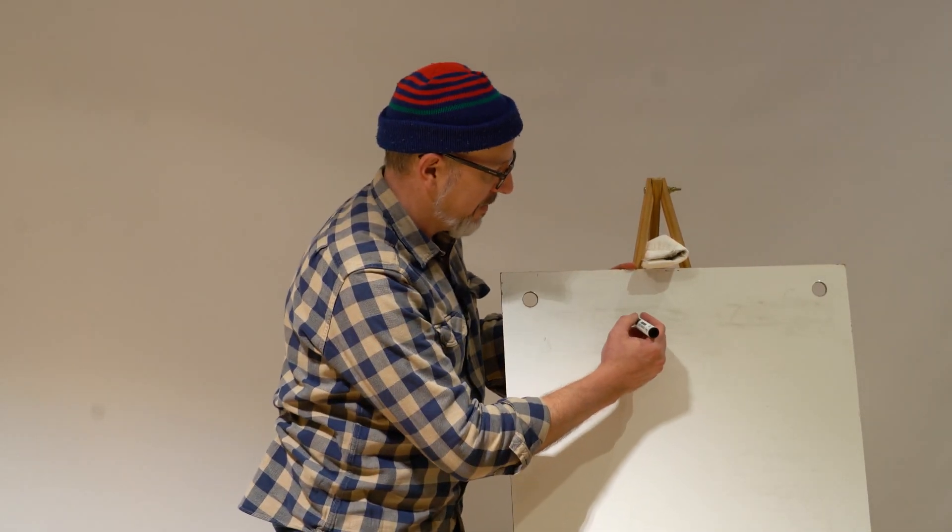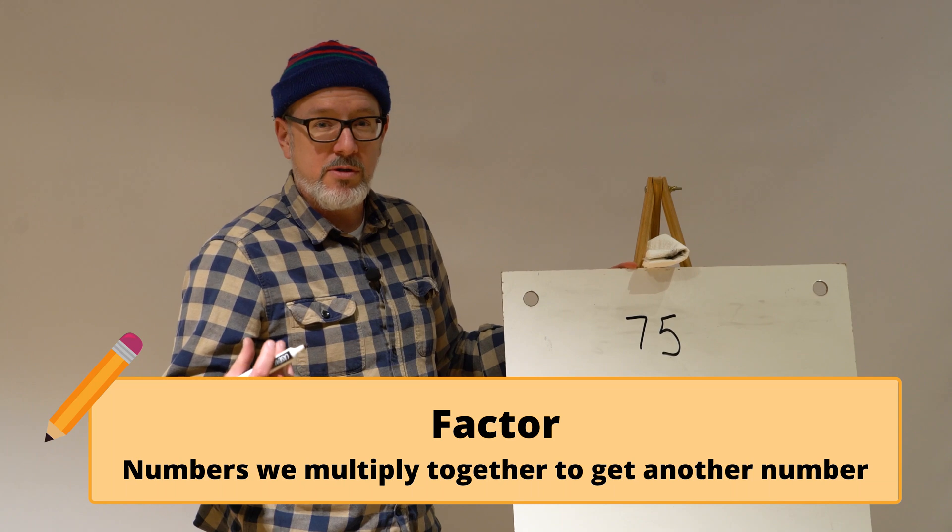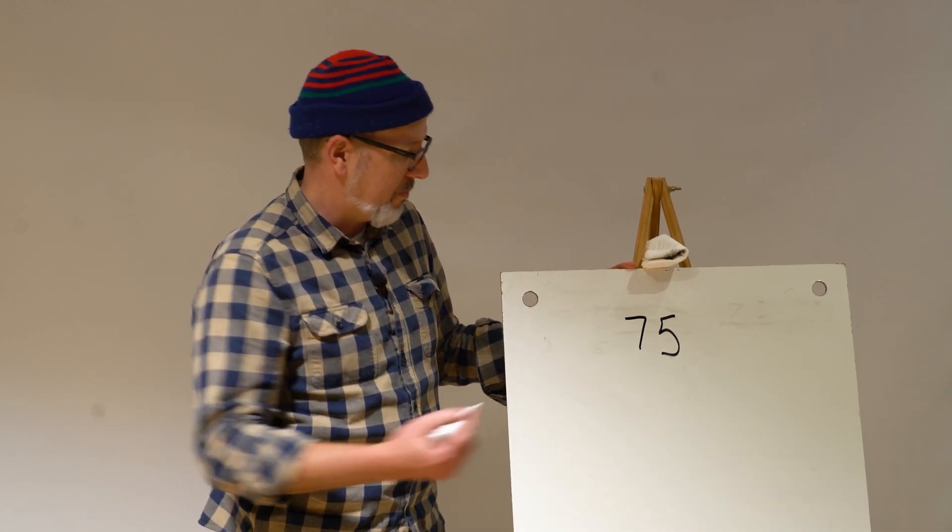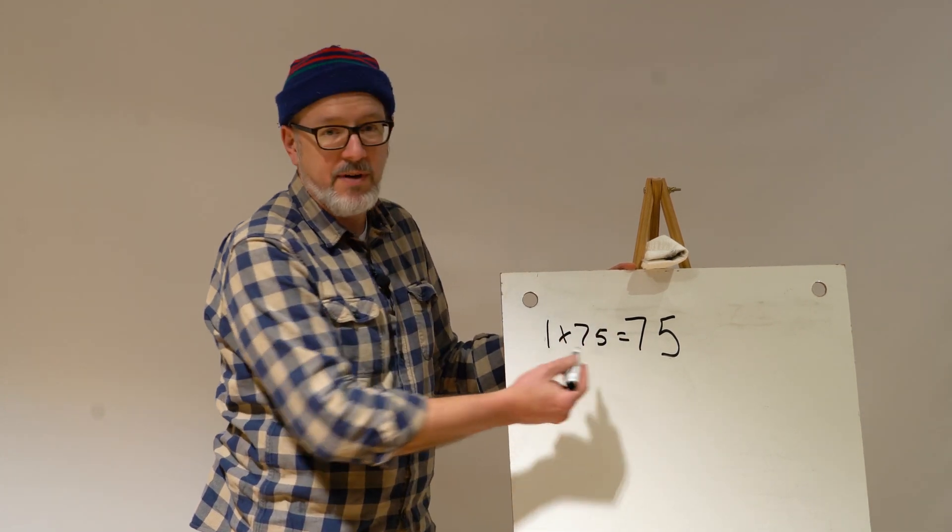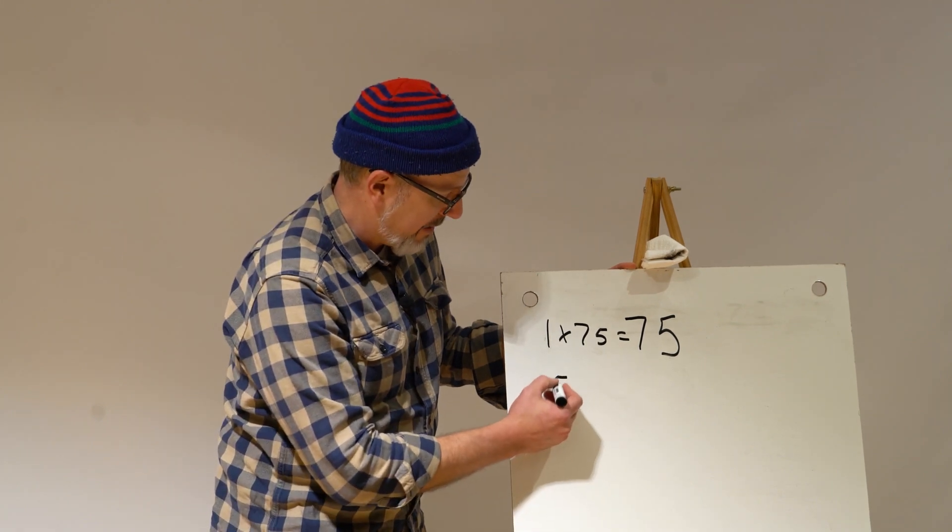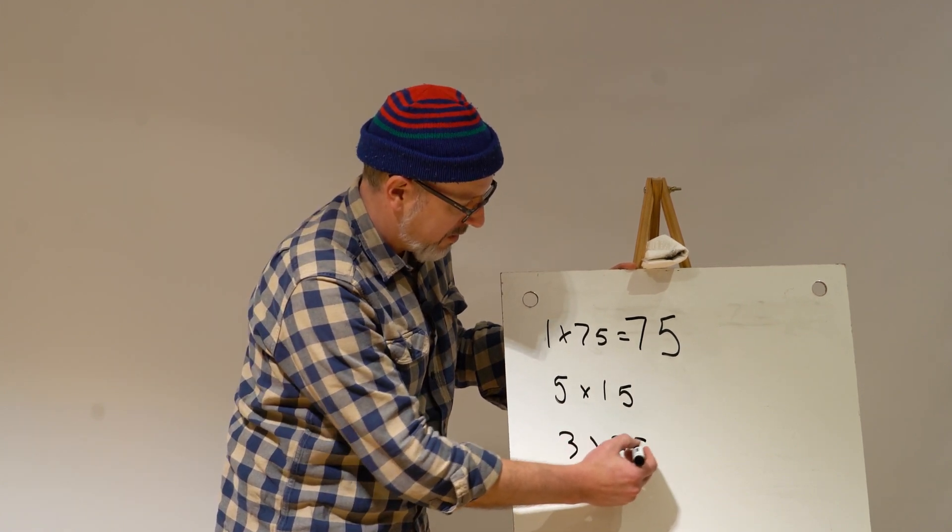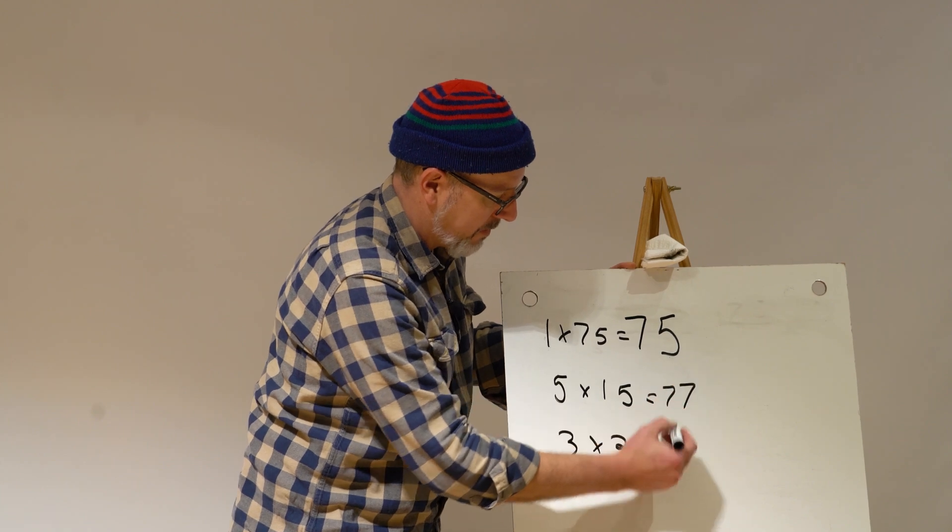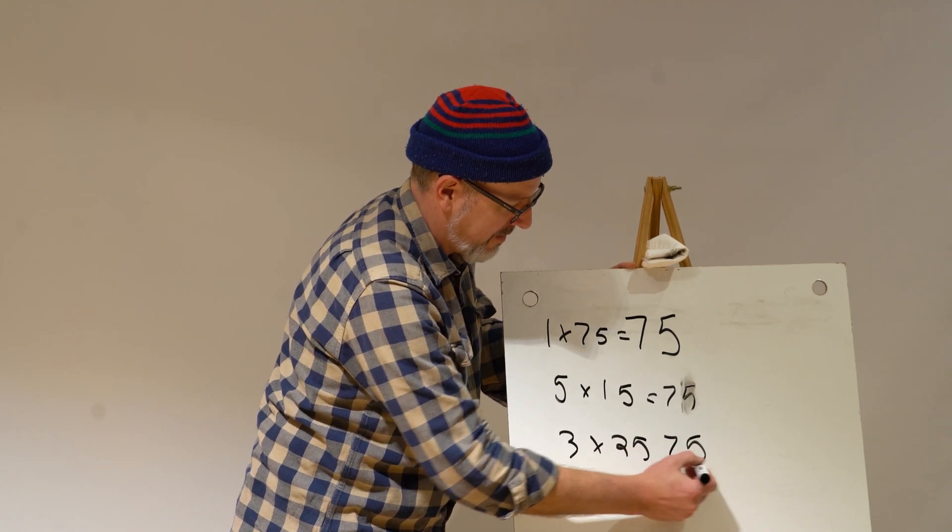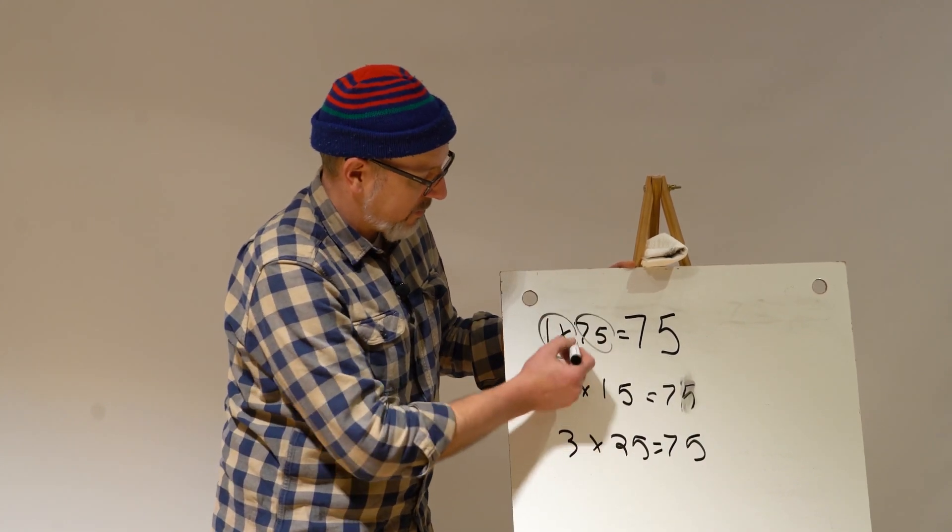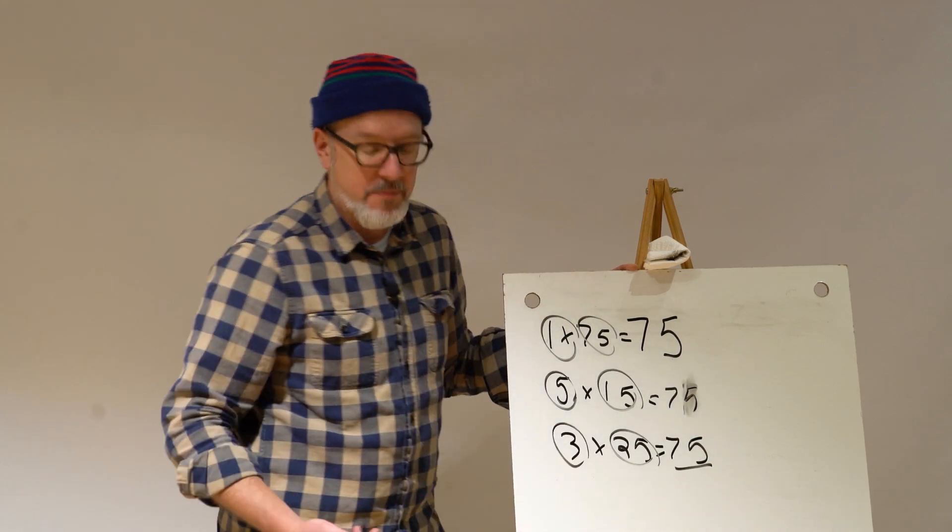If I had the number 75, if I multiply any two numbers together to get 75, those two numbers that are multiplied together are called factors. For example, if I multiply 1 times 75, that equals 75. Both 1 and 75 are factors. Also, if I multiply 5 times 15 or 3 times 25, those both equal 75 as well. These are all factors. Factors are numbers that when you multiply them together, you get a multiple.